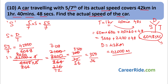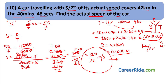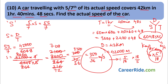The actual speed of the car is 35 km/h. Remember: to convert km/h to m/s, multiply by 5/18; to convert m/s to km/h, multiply by 18/5. Using the simple DST formula and correctly identifying the problem type, we solved this easily. With practice, you will be able to solve any speed-distance-time sum within one minute.